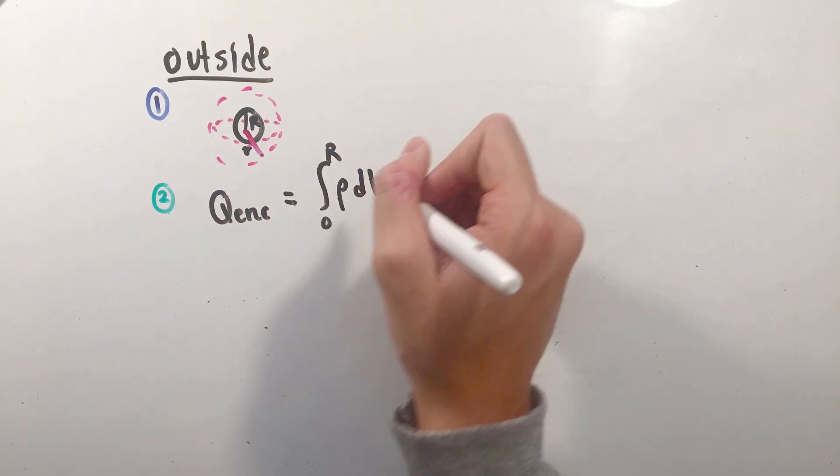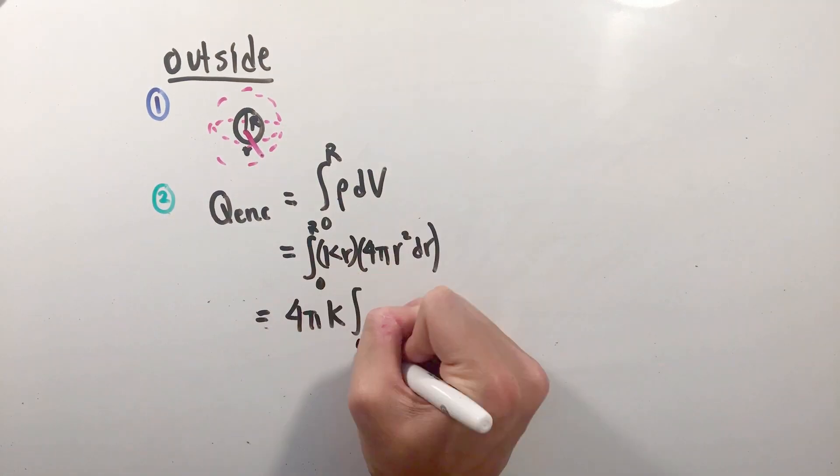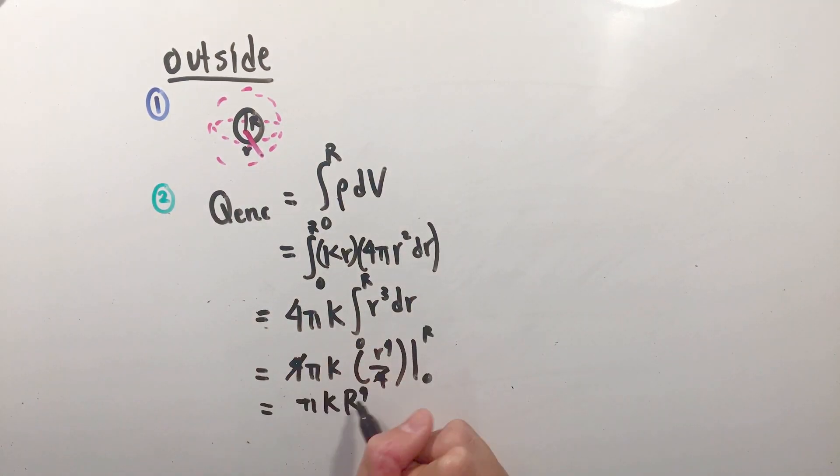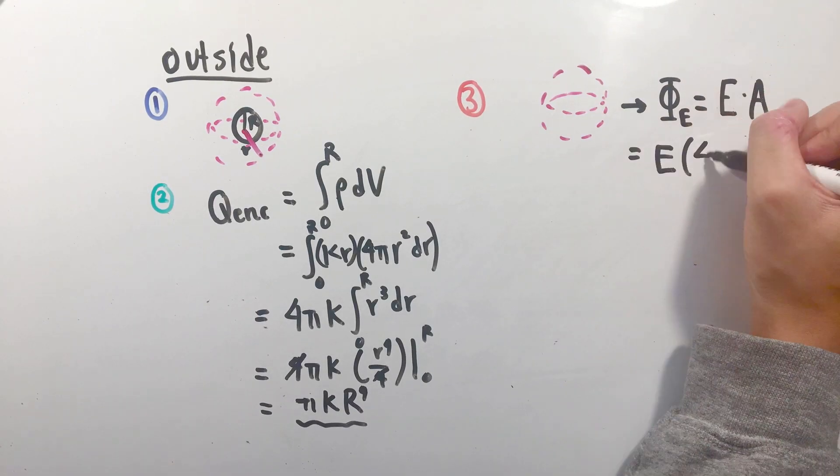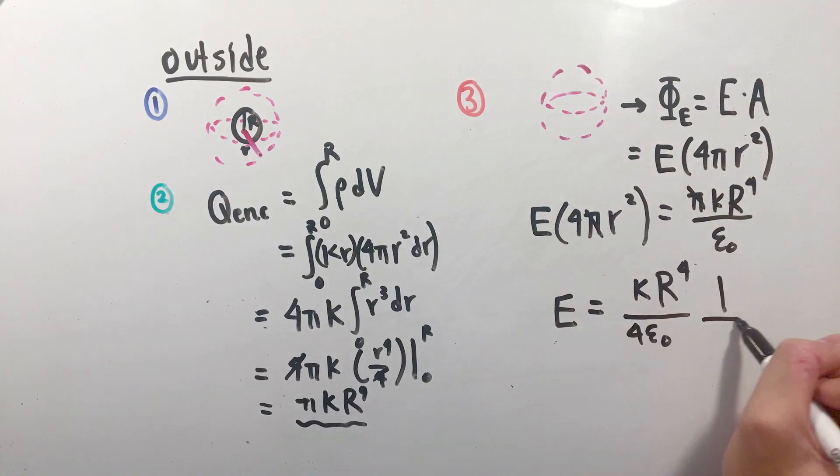Like the insides, the charge enclosed in the sphere can be found through integration, only this time integrating over the entire sphere's radius. Using the exact same process, we can arrive at our electric field for the outside of a sphere of charge.